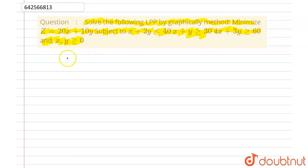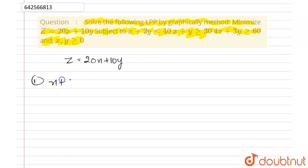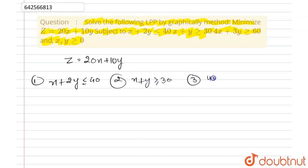We have to minimize z equals to 20x plus 10y, and we have been given three equations. The first equation is x plus 2y less than or equal to 40, the second is x plus y greater than or equal to 30, and the third is 4x plus 3y greater than or equal to 60. Since x, y are greater than or equal to 0, the curve will be plotted in the first quadrant.